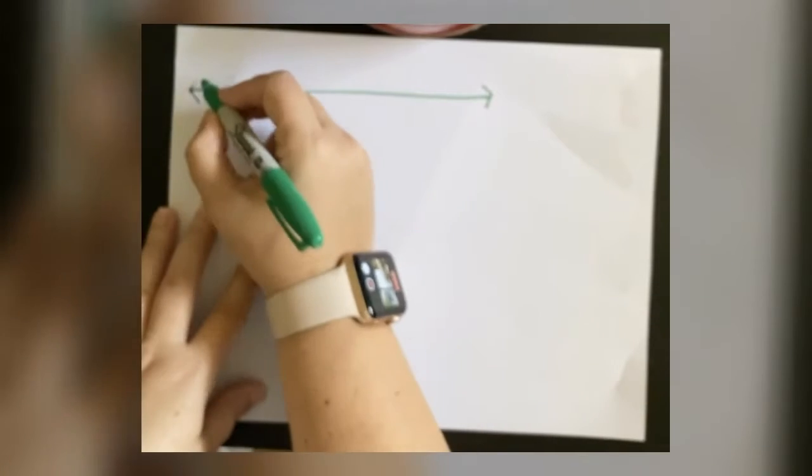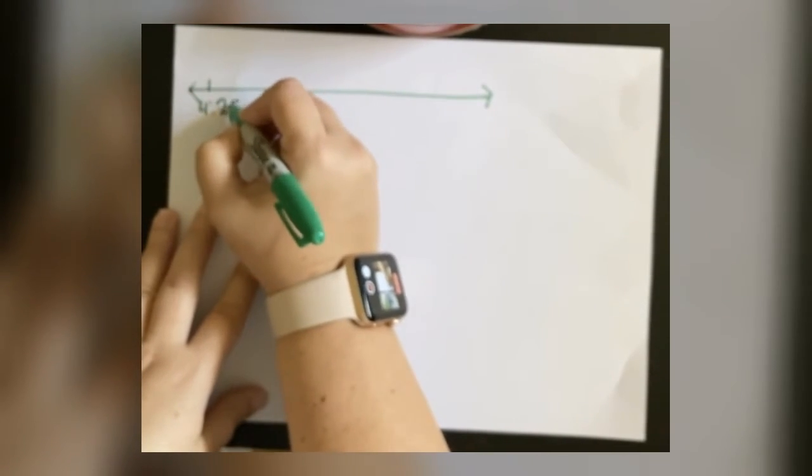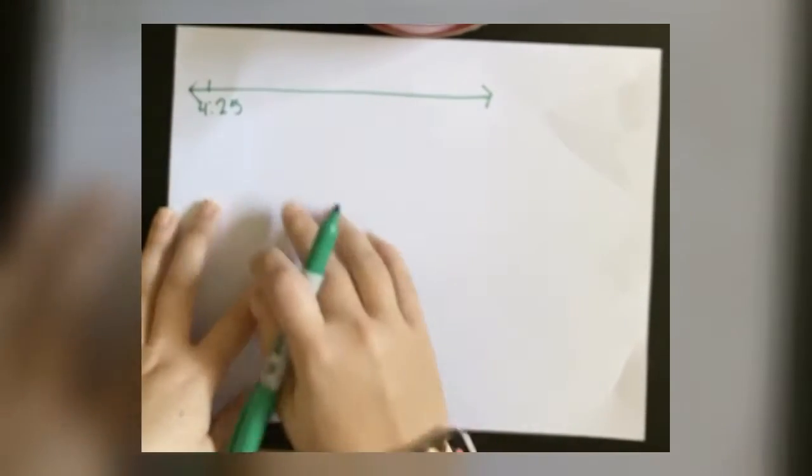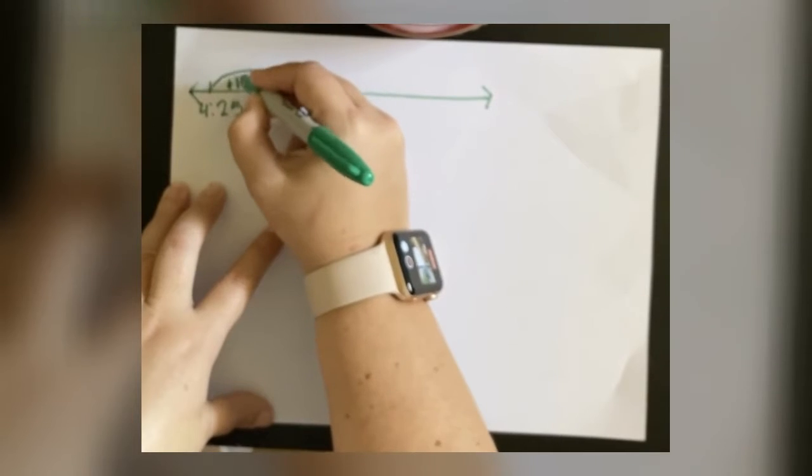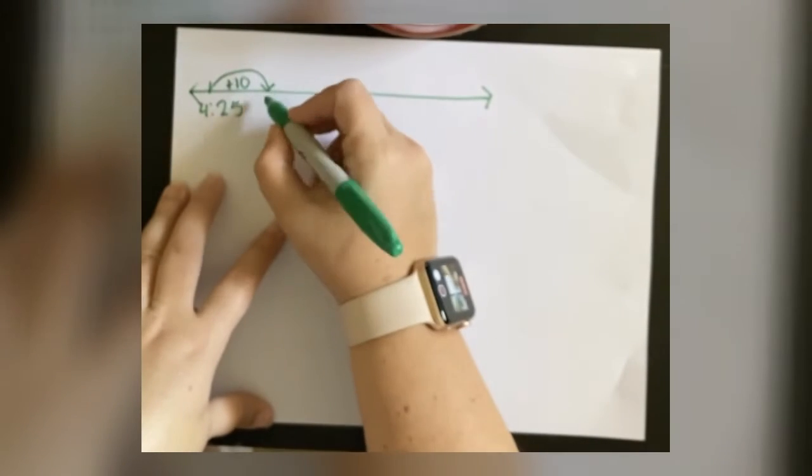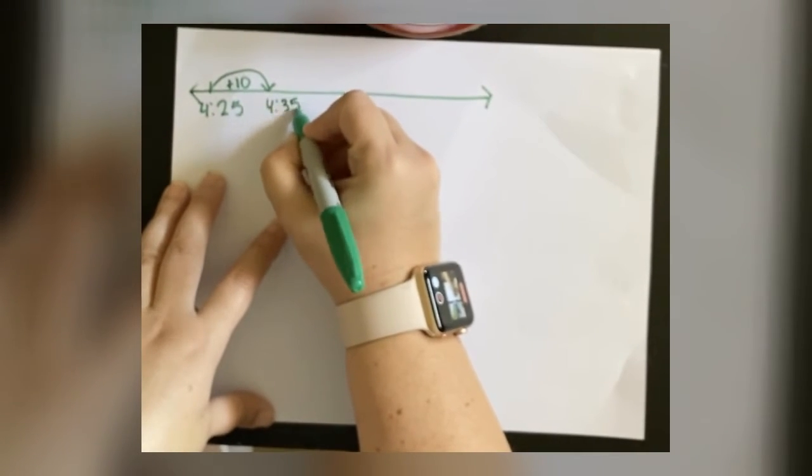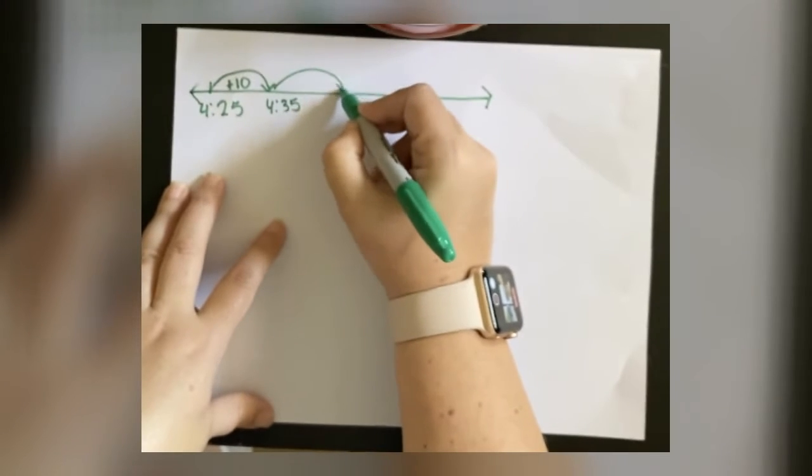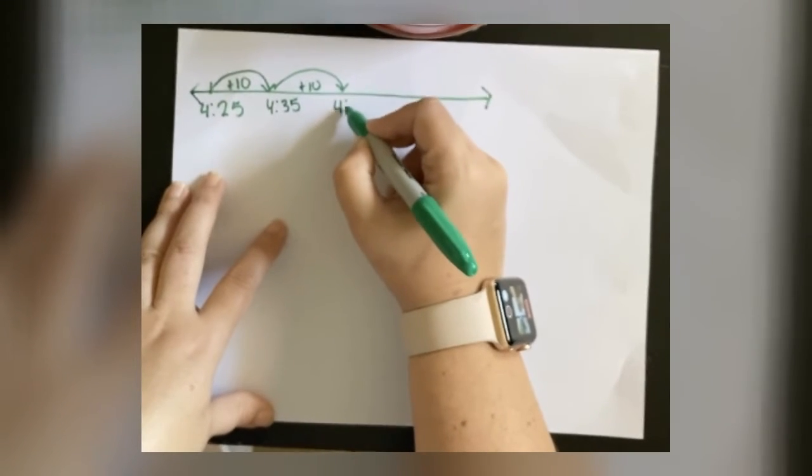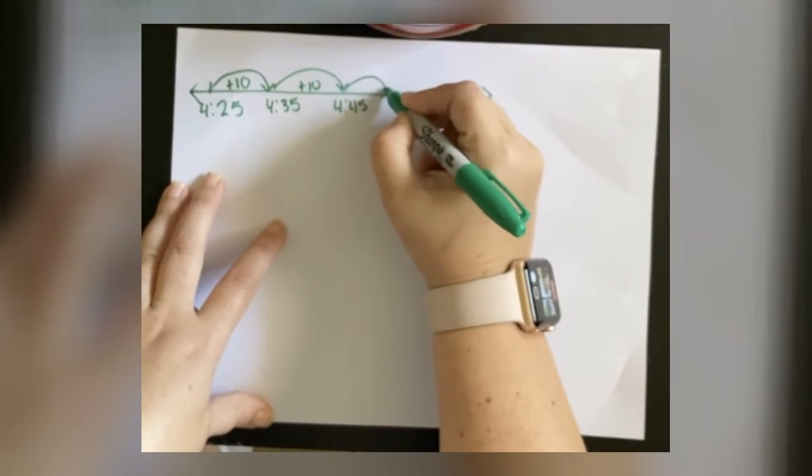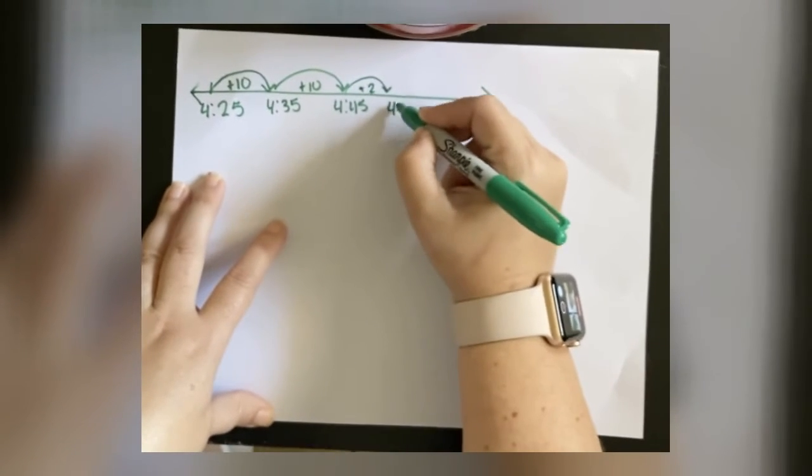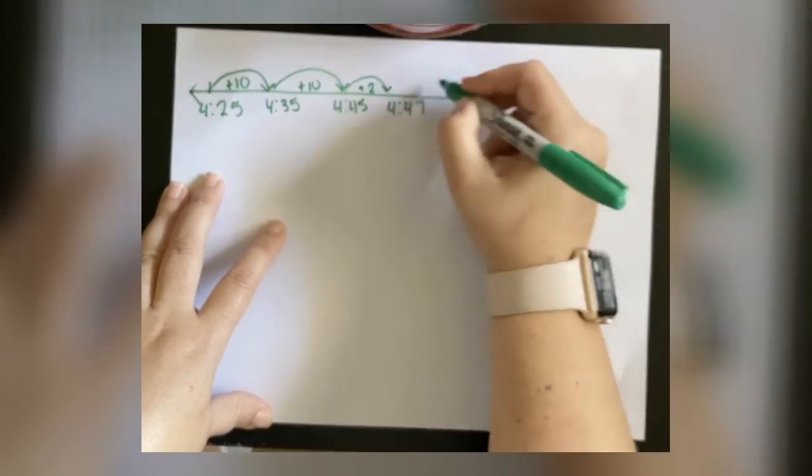For the first step, you had to figure out how many minutes I read from 4:25 until 4:47. So in order to do that, I'm going to start with 4:25 on the number line and I am going to add friendly numbers to help me figure this out. So 10 minutes would be 4:35, 10 more minutes would be 4:45, and I have to go all the way to 4:47, so I still need to add two more minutes here.